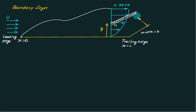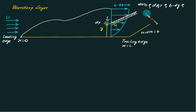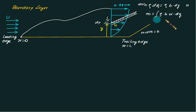We can calculate the discharge through this element as rho into b into dy multiplied by u, giving the mass flow rate dm-dot. So m-dot from this section is given as the integral of rho multiplied by b multiplied by u multiplied by dy, integrated from 0 to delta. This is the mass flow rate at this section, where delta is the boundary layer thickness.